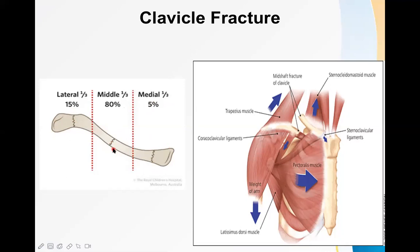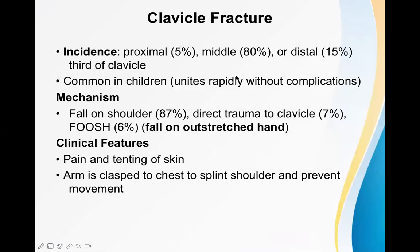Regarding the incidence of fracture, the most common site is the middle one-third — almost 80% of fractures occur there, probably because that area acts like a junction between the two parts. The lateral third is second at about 15%, and the medial third is just 5%. However, if a fracture occurs in the medial part, there is a high chance of complication, including damage to the neurovascular bundle.